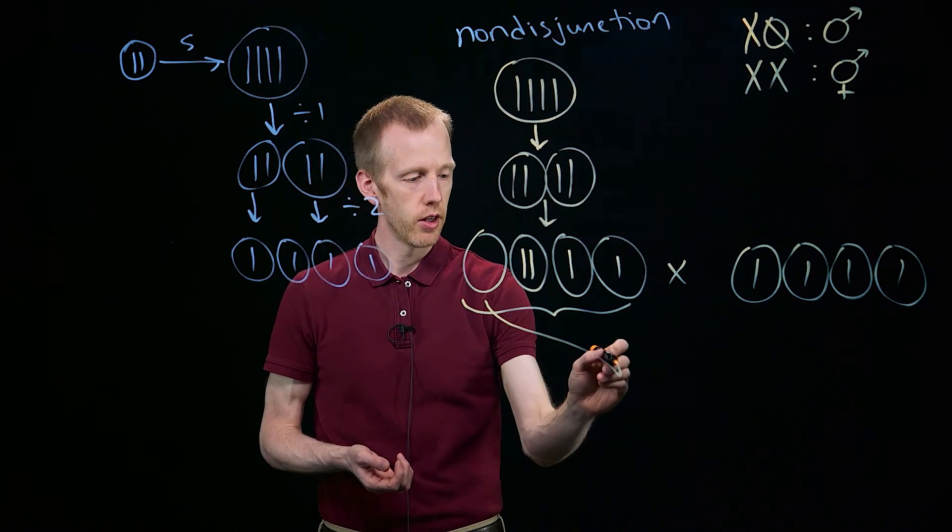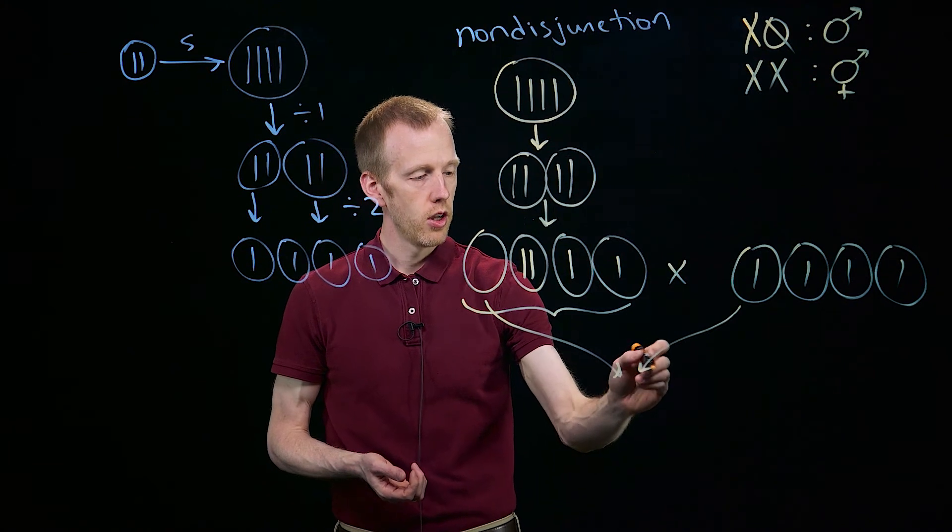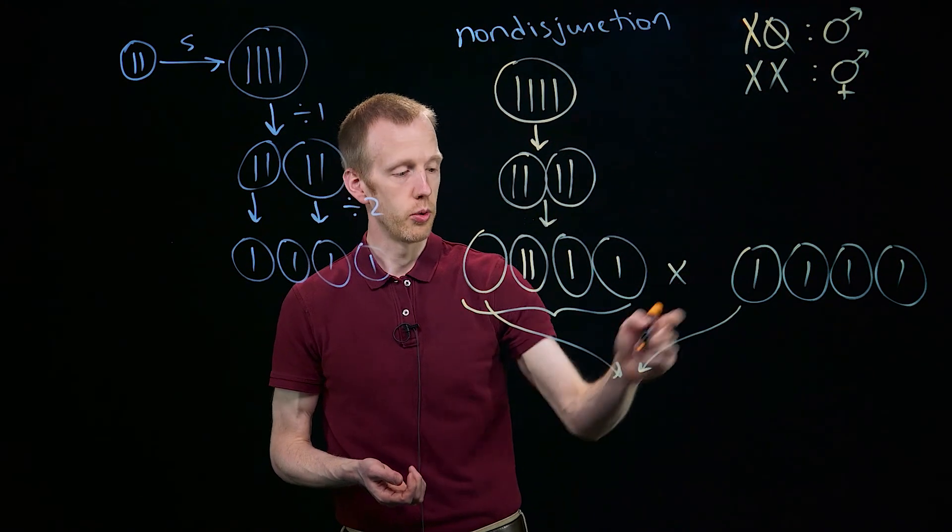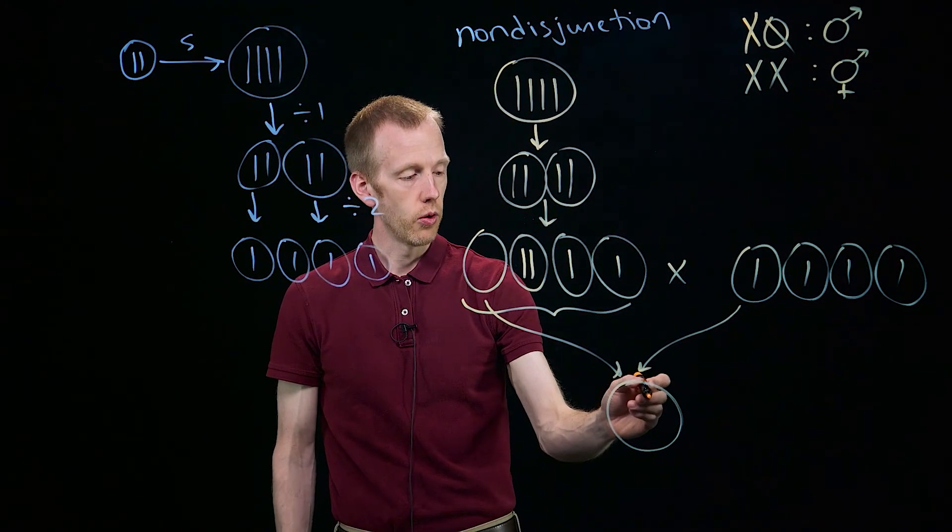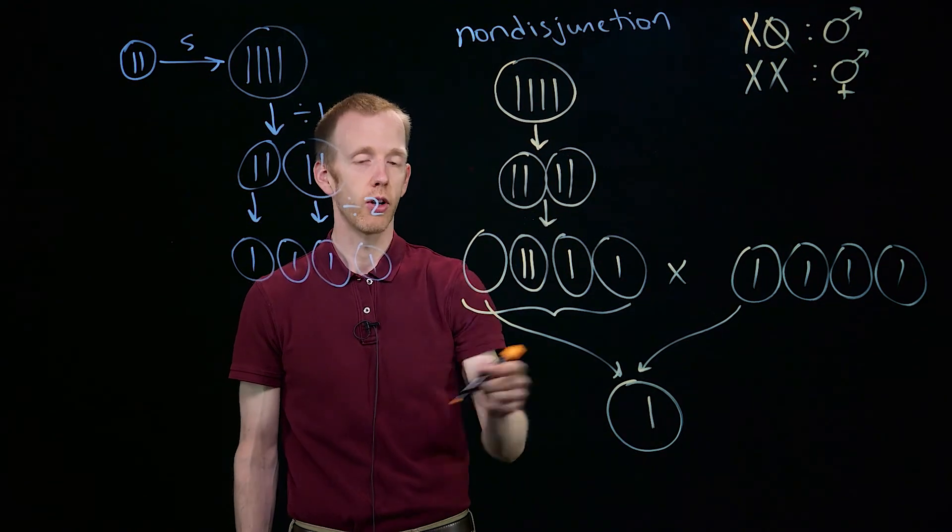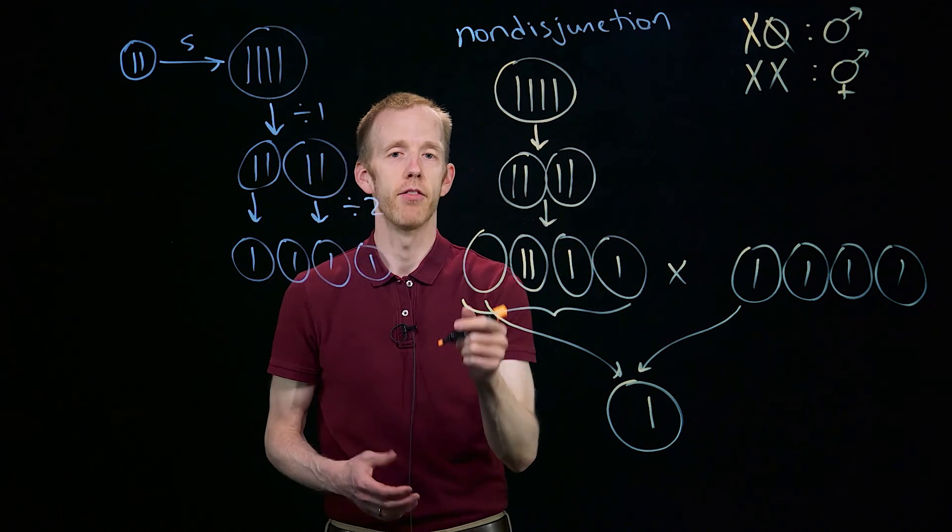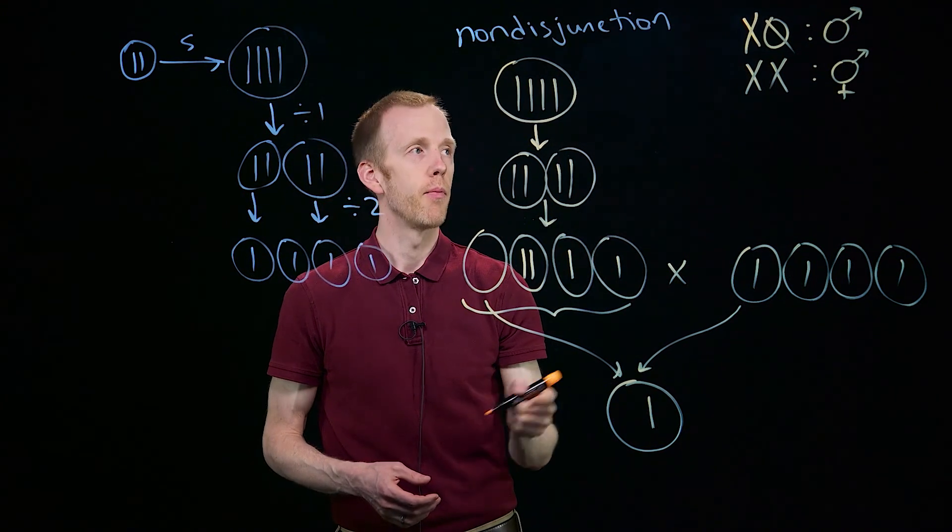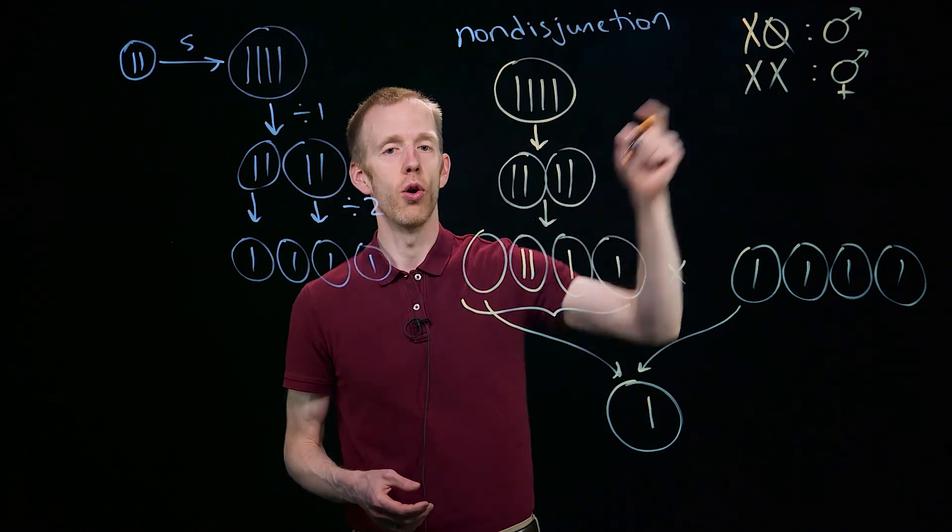And the resulting products of fertilization, then, could be - you get an individual, if this is the X chromosome we're tracking, that only has one X chromosome, because the other gamete that was used to fertilize and produce that embryo didn't have an X chromosome to begin with. That's how you get something like an XO organism.